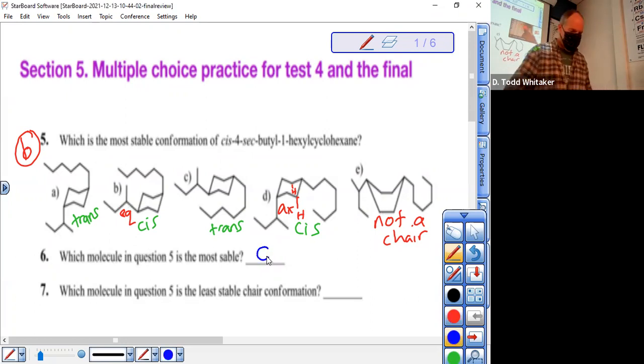And then seven. Sorry, don't pick E, it's not a chair at all. In this question I want the least stable chair, so don't pick this. It's called a boat. We don't even talk about boats in this course, but OWL talks about boats, and you'll see boats when you have two bulky groups.